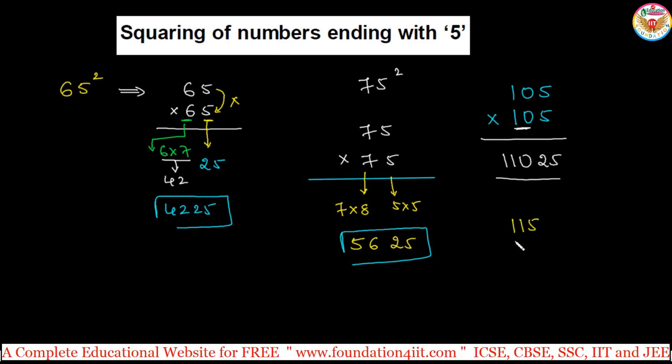Like 115 times 115, any big number ending with only 5, we can use this concept. 11 is the number, 11 into 12 is 132, beside 25. So 13,225. This is one case, only ending with 5.